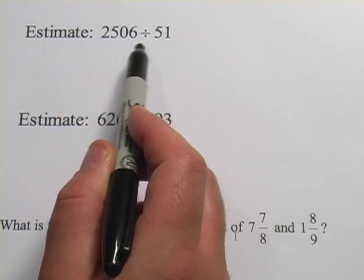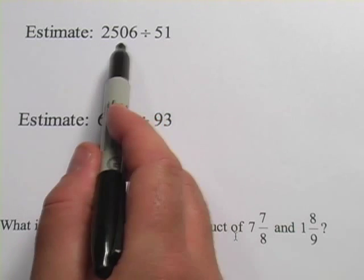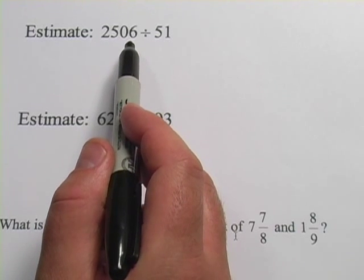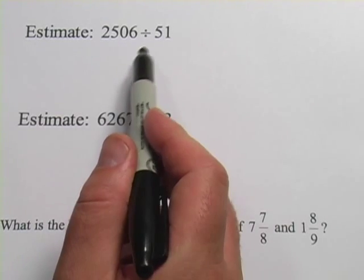When we estimate an answer, what we do is we round these numbers to numbers that are convenient to work with, and then we sort of do the division in our head.